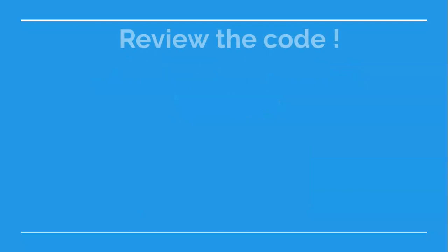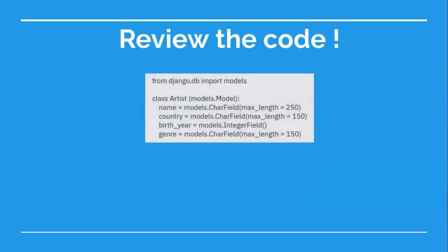Let's review the code snippet line by line. In the first line, we import from django.db. The models module has the base class for all of our models. This first line is automatically created by Django when a new app is created. In the next line, class Artist — here we are defining our artist, or in other words, our model of the artist. The special keyword class is used to define a model, which is basically a class.